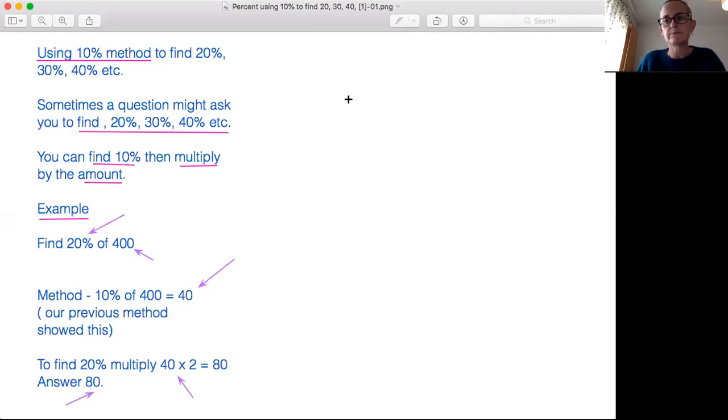Working through this example here using the 10% method to find 20%, 30%, 40% etc. So what we're doing is we're finding the 10% number first and then we're going to change it into 20%, 30%, 40% etc.